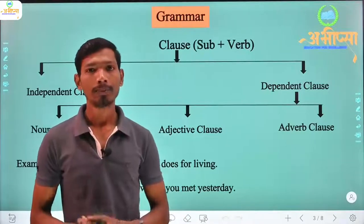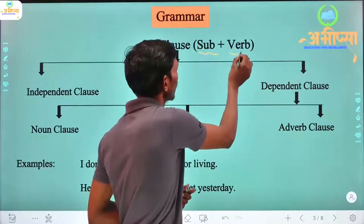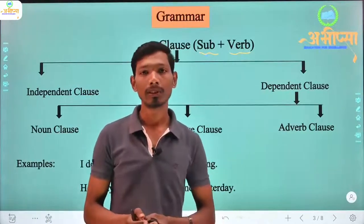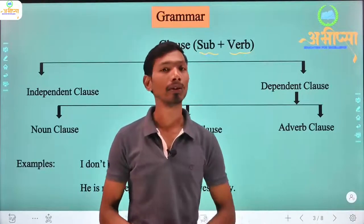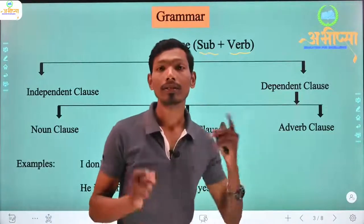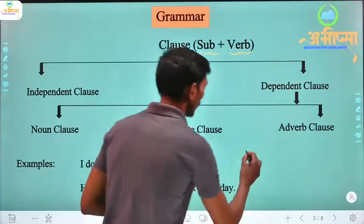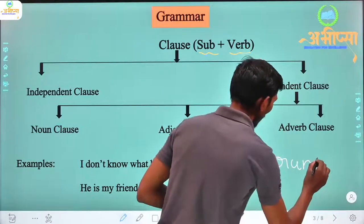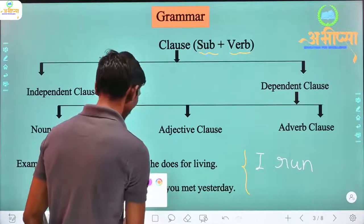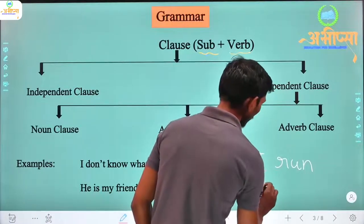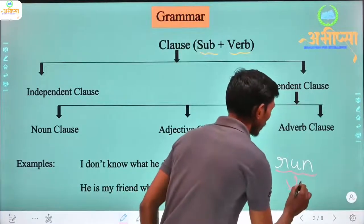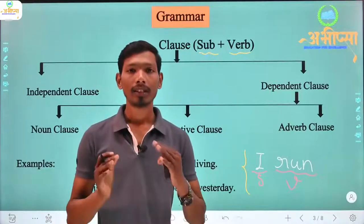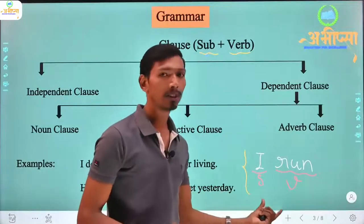A clause is a group of words that should have more than one subject and at least one verb. In any sentence, one clause can appear, or there can be more than one clause — two clauses, three clauses. It depends on the number of subjects and verbs. For example, the sentence 'I run' — here 'I' is the subject and 'run' is the verb. So we can call this a clause. Yes, this is a clause — a group of words which has a subject and a verb.